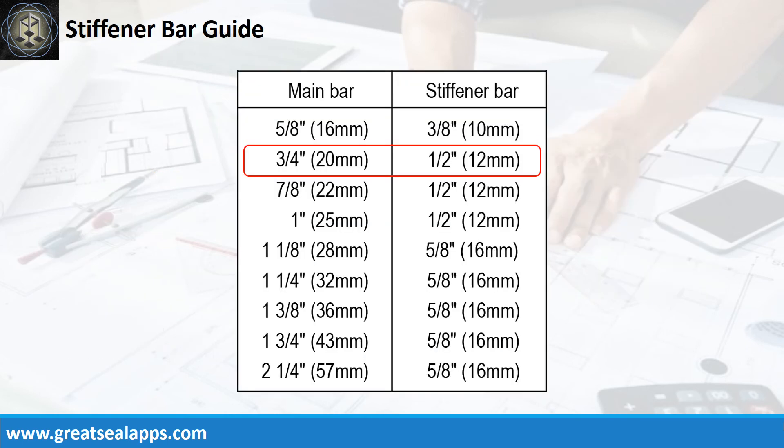For 20 mm main bars, use 12 mm stiffener bars.